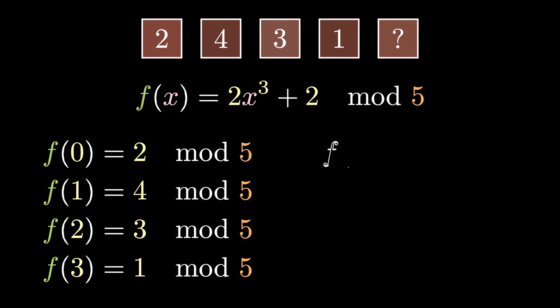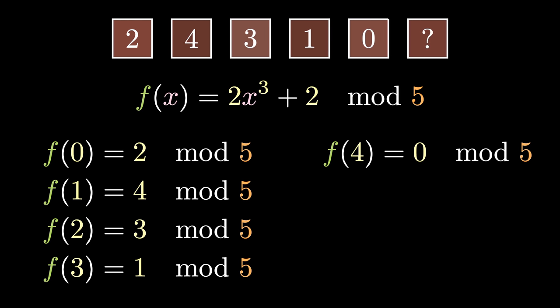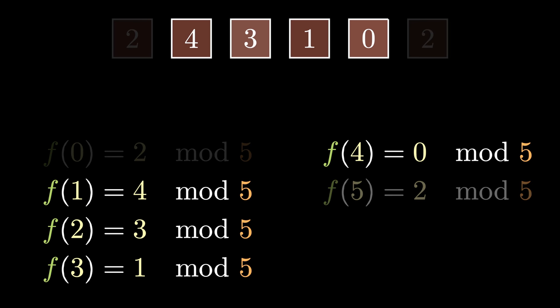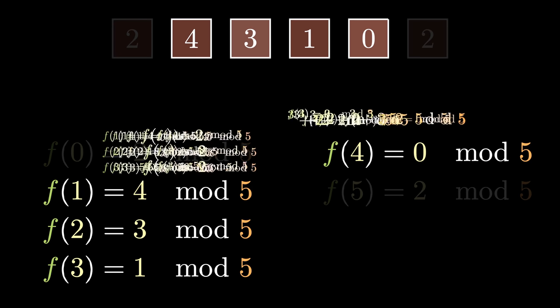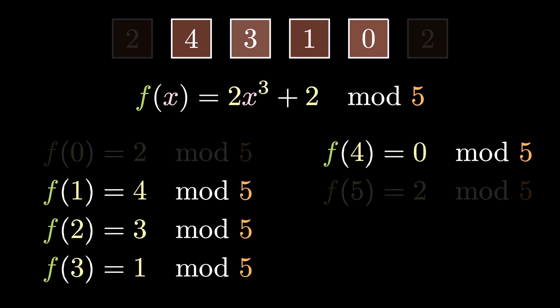Now we plug in x is equal to 4 and x is equal to 5 into the polynomial, which is 0 and 2 respectively. Now we send these 6 packets over. Let's assume we lost packet 1 and packet 6. We now perform Lagrange interpolation on the same remaining packets, giving us the same polynomial as before. After this, we plug in x is equal to 0, 1, 2, and 3 to retrieve the original values.